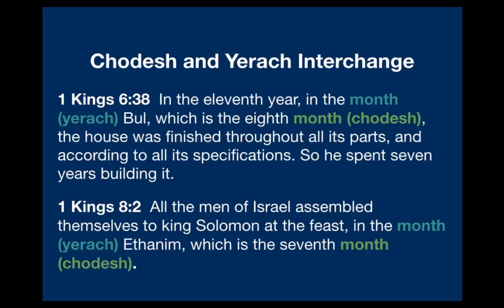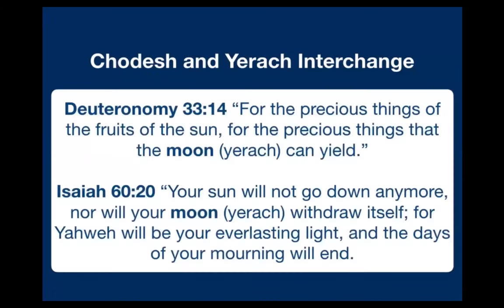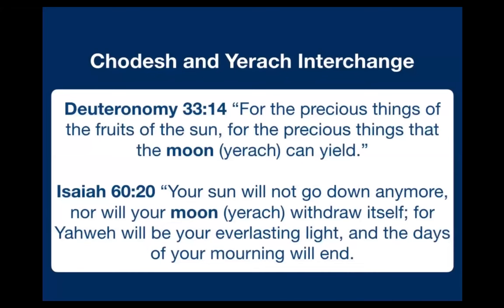First Kings 8:2 says the same thing: 'all the men of Israel assembled themselves to King Solomon at the feast in the month — yerach — which is the seventh month — hodesh.' Two Hebrew words, one English translation. It would have been better if the translators had put 'in the moon Ethanim, which is the eighth month.' The word yerach is also translated as 'month' in Exodus 2, where Jochebed hid her baby for three months — that word 'months' is not hodesh but yerach. Yerach is also directly translated as 'moon' in Deuteronomy 33:14 and Isaiah 60:20.